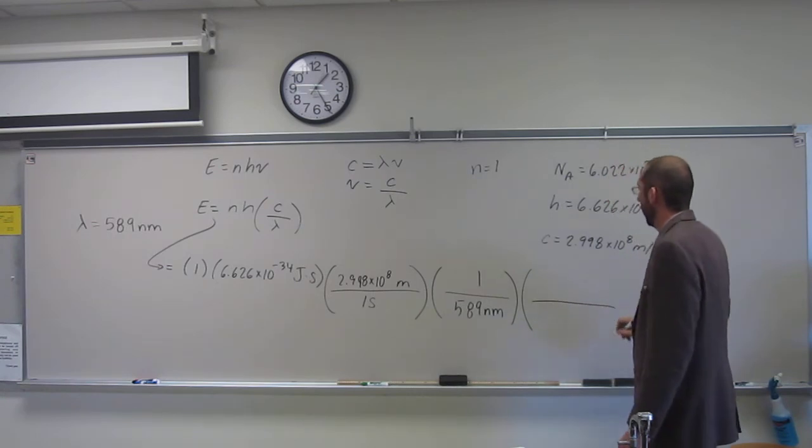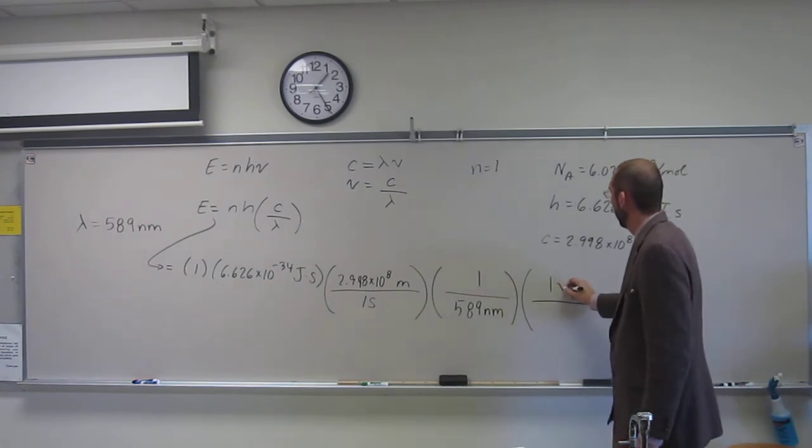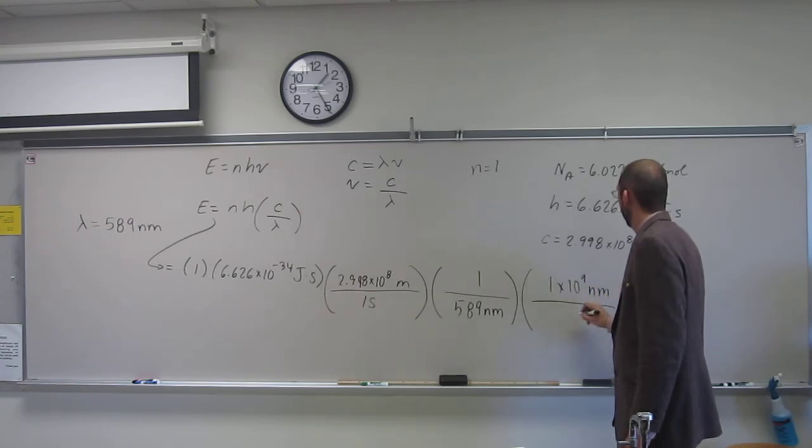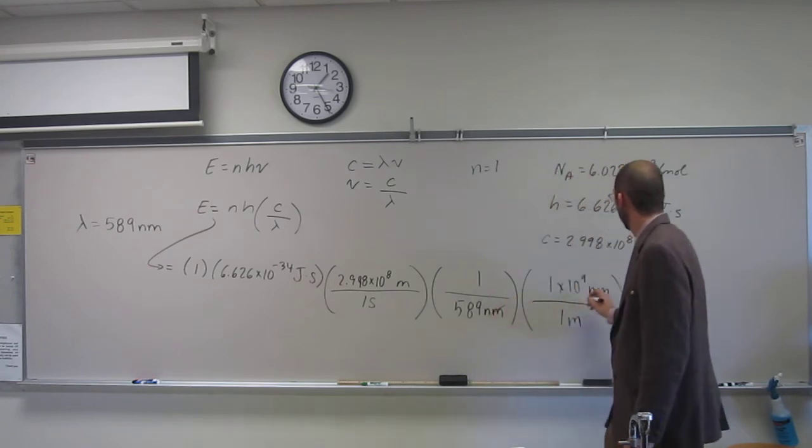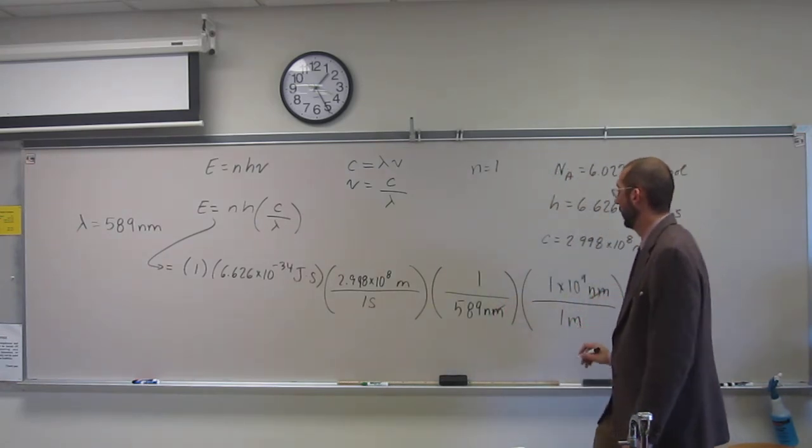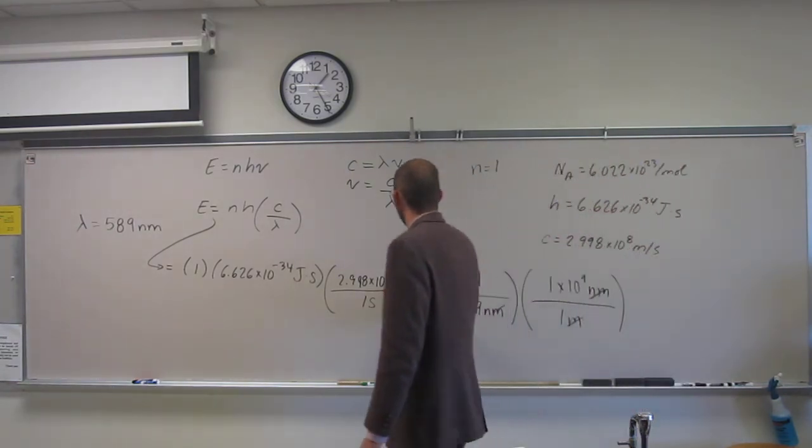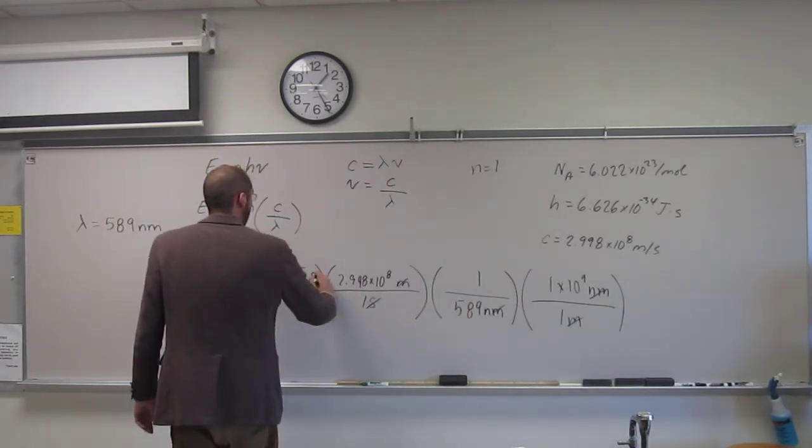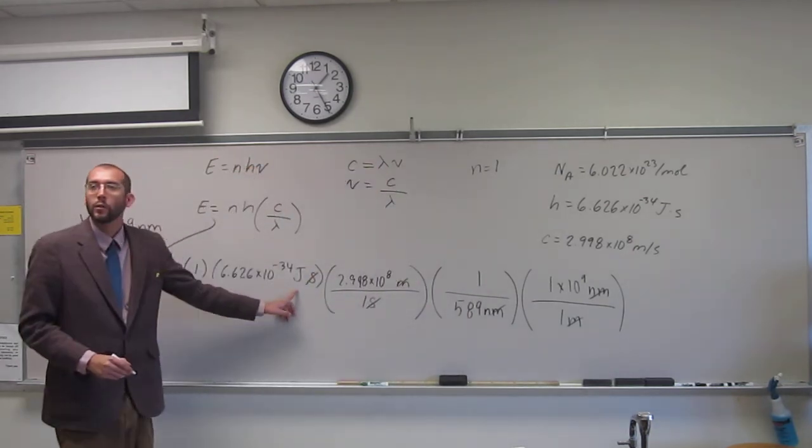So how do I convert from nanometers to meters? Well, 1 times 10 to the 9th nanometers is 1 meter. So nanometers cancel, meters cancel, seconds cancel, leaving us with joules.